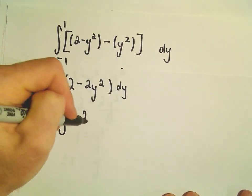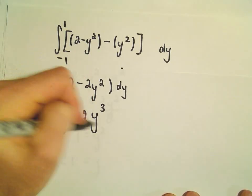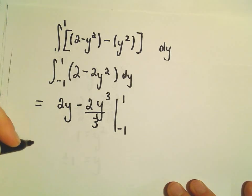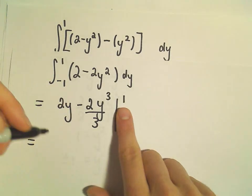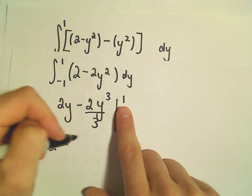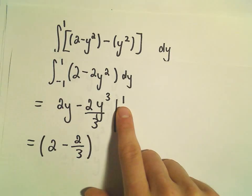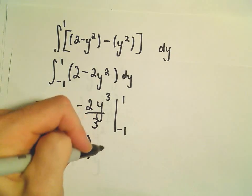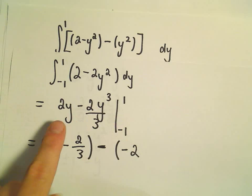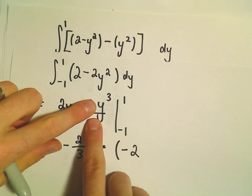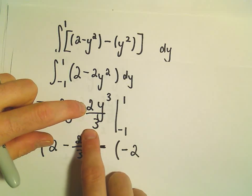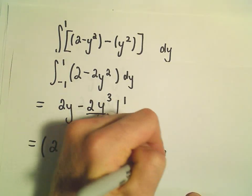And then, when we integrate, we'll get 2y minus 2y to the third over 3 from negative 1 to positive 1. Let's see. If we plug 1 in first, we'll get 2 times 1, or 2. 1 cubed is just 1, so we'll get 2 thirds. So, 2 minus 2 thirds will be our upper limit. Minus, we'll plug in a negative 1. That'll give us negative 2. So, negative 1 cubed would be negative 1. So, that would give us negative 2 thirds. But then, the extra negative will make a positive 2 thirds.